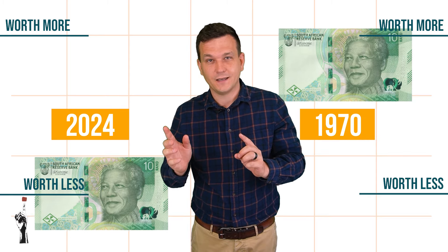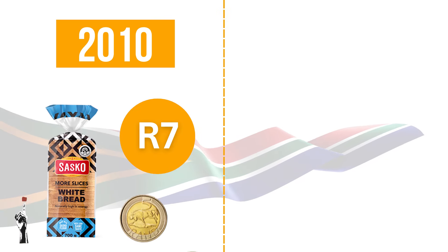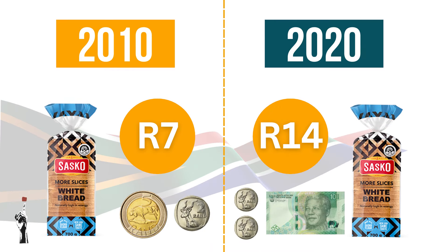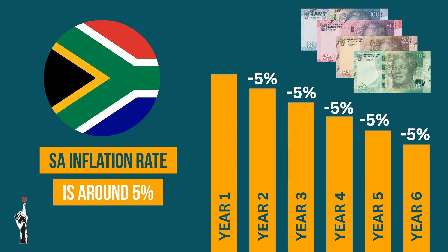For example, in 2010 a loaf of bread in South Africa cost around 7 rand, and in 2020 the same loaf cost around 14 rand. South Africa has an inflation rate of around 5%, meaning our currency becomes less valuable every year. Now imagine that inflation that usually happens over years happening over a few days — that is hyperinflation, and that is very dangerous.